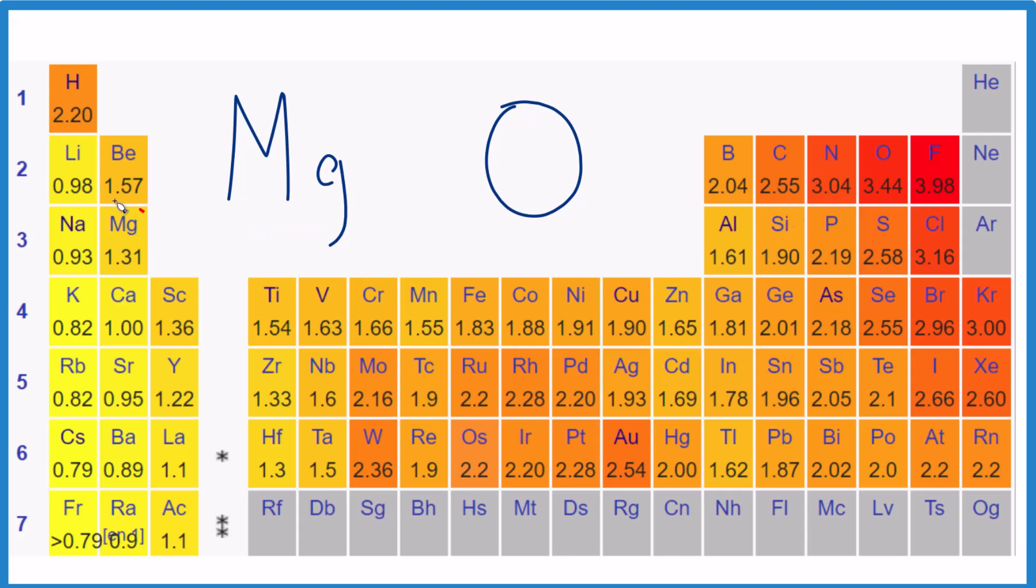So magnesium here in group two, 1.31, oxygen, 3.44. Oxygen is much more electronegative than magnesium, and that makes sense.